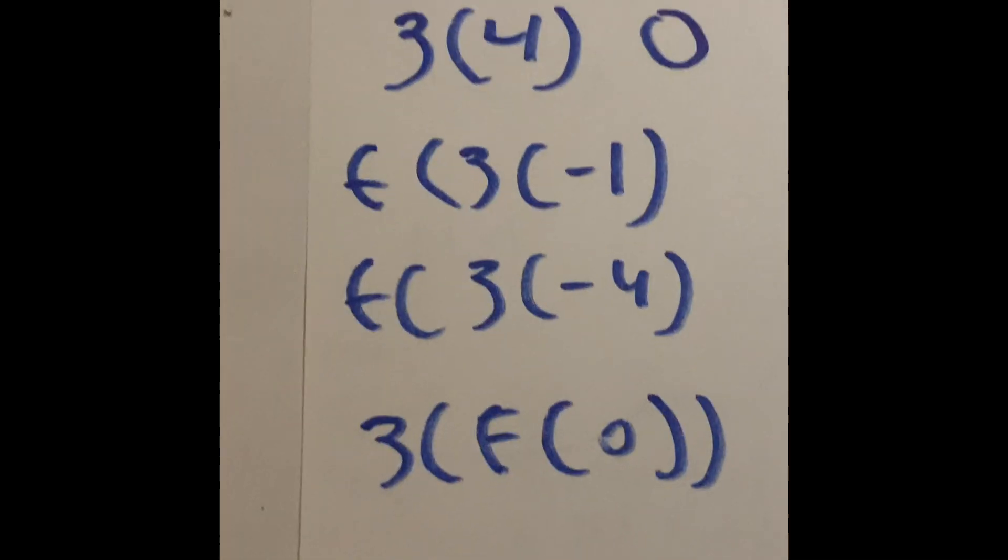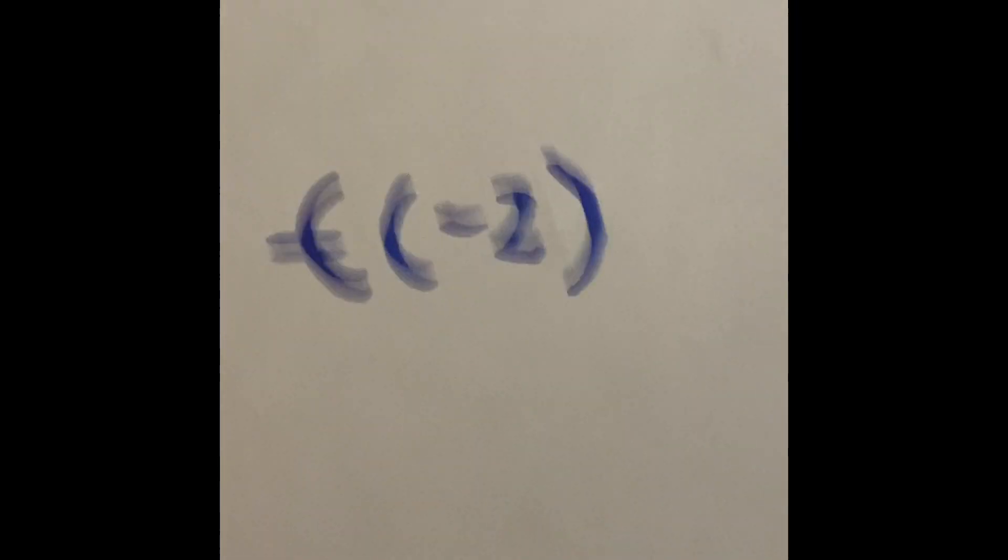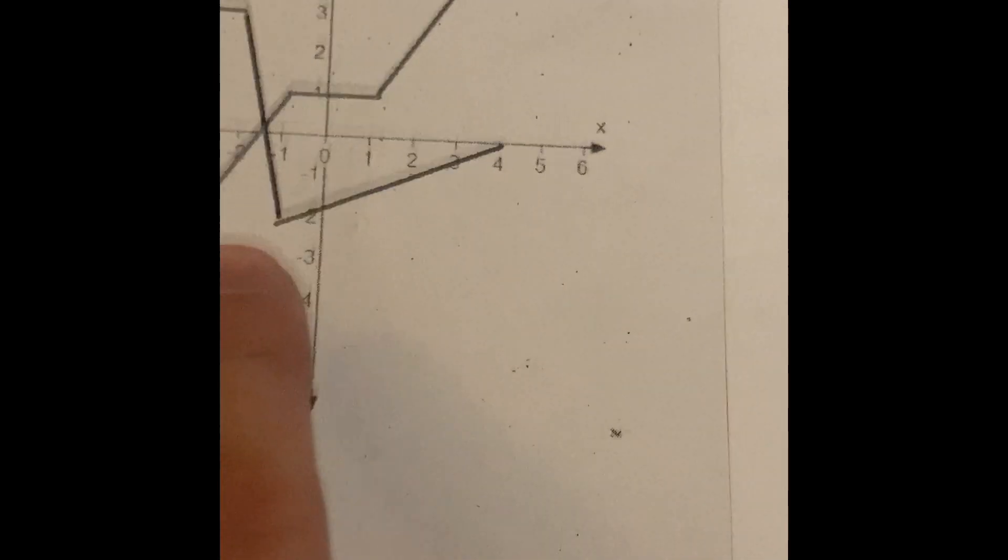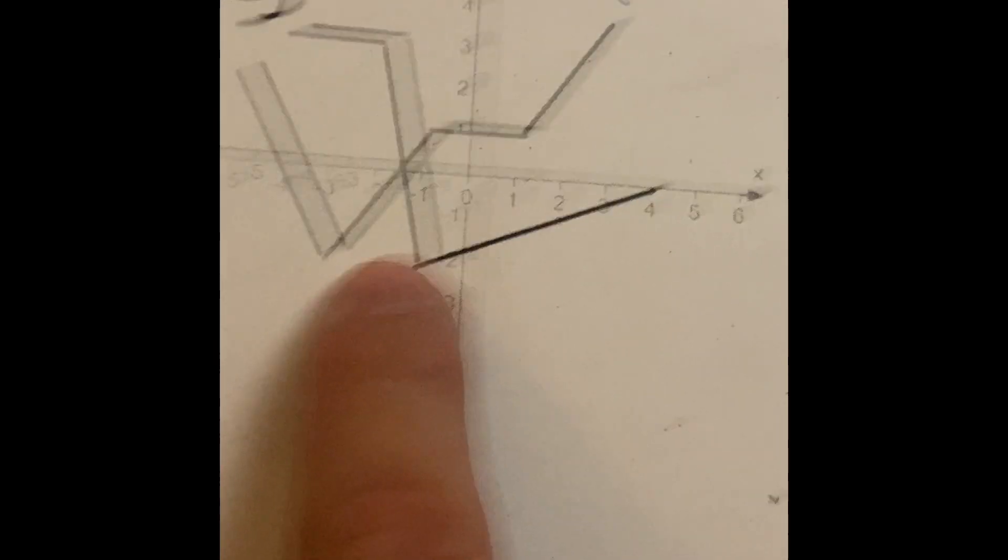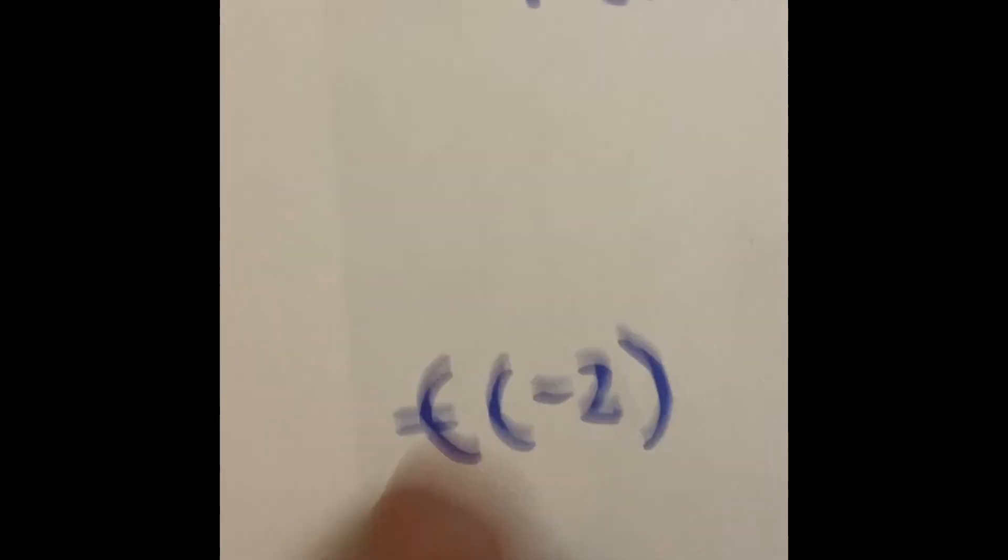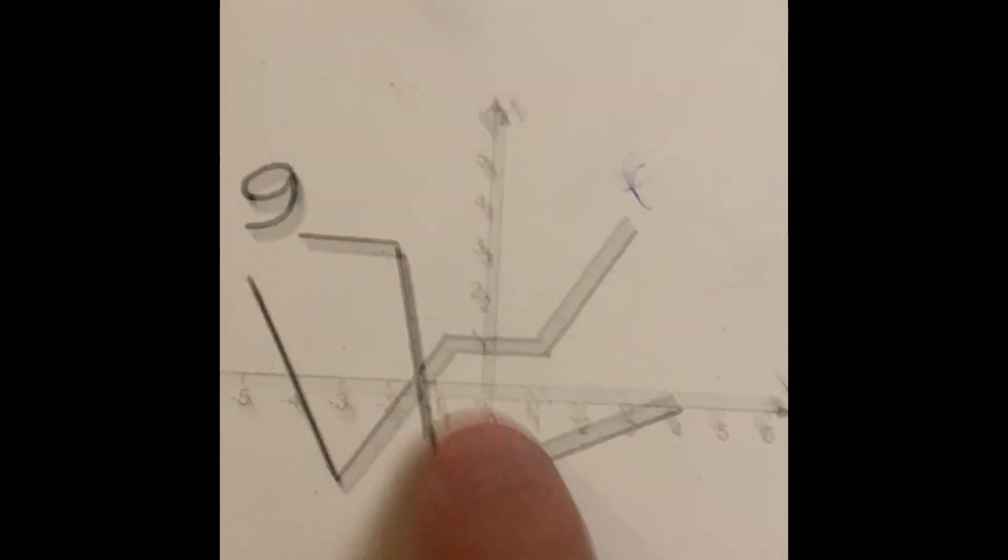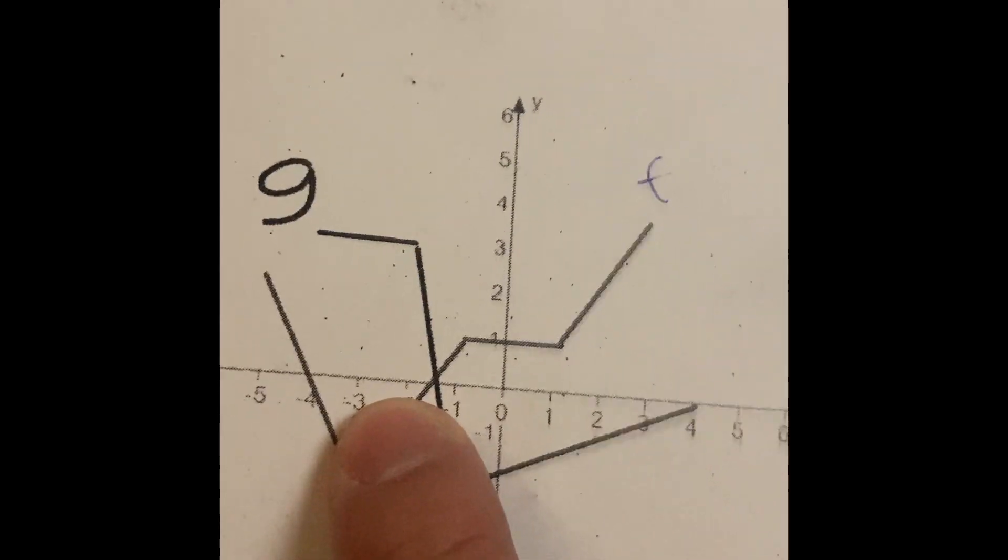So but we're not done yet, because now we have the function of negative two. So basically, what we're trying to do is get to a train station. But the problem is the g line did not get us to our answer. Once we get to the g line at that station right there, we try to take with negative two and get to the f line, which is our destination. It's another way to look at it. So now we have to find the function of f of negative two. So we go one, two, but look, we go to three.